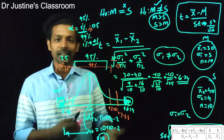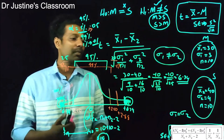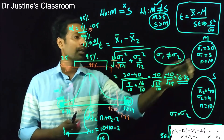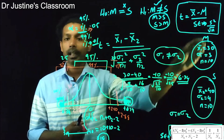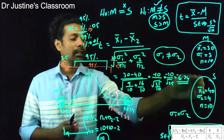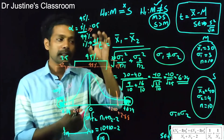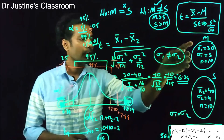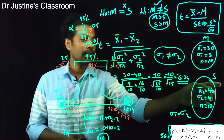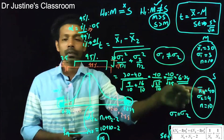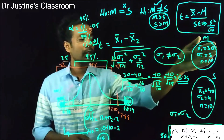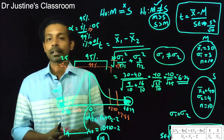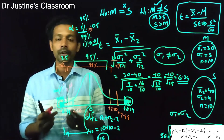The third assumption is independence of observations. Within each group, all observations must be independent of one another. Additionally, group one and group two must be independent from each other — observations in the married group should not influence observations in the single group.